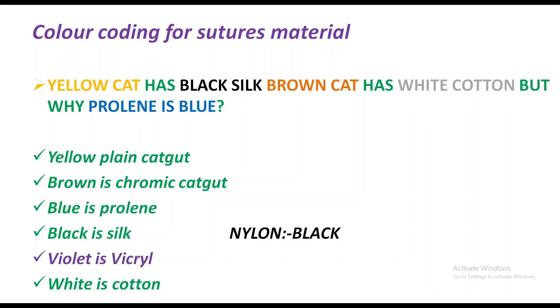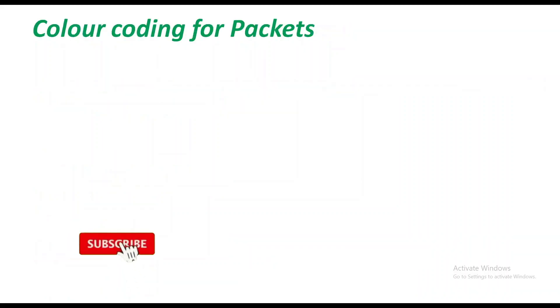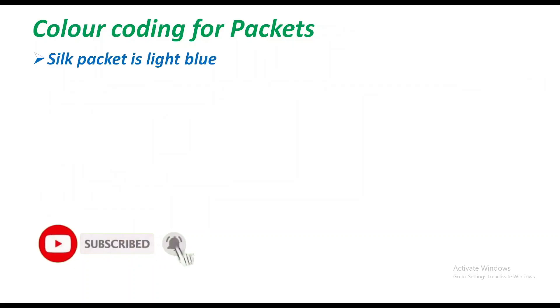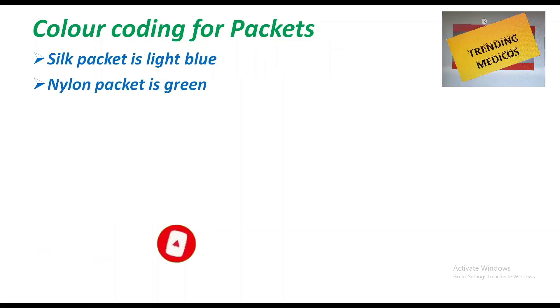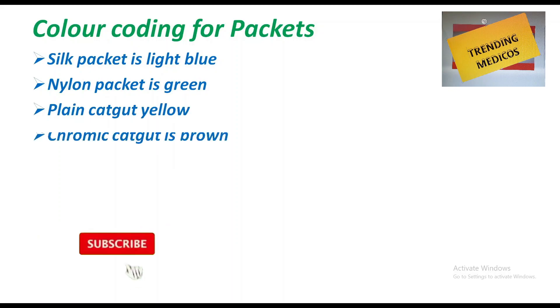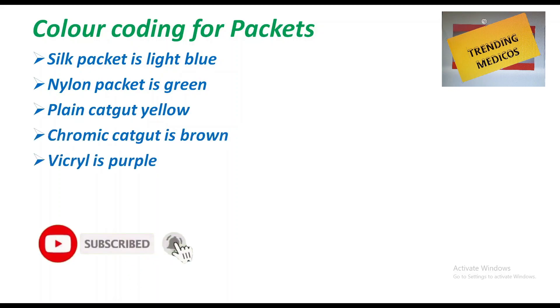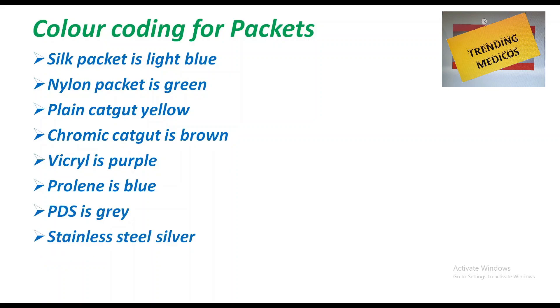You can remember that nylon is black in color. The packets also have color coding: silk packet is light blue, nylon packet is green, plain catgut is yellow, chromic catgut is brown, vicryl is purple, prolene is blue.